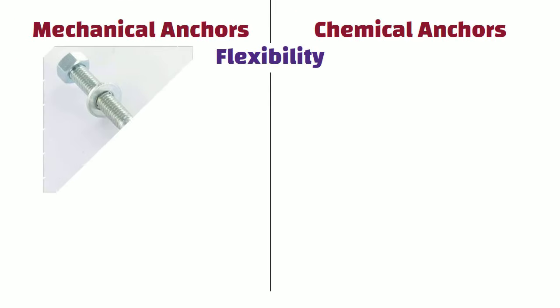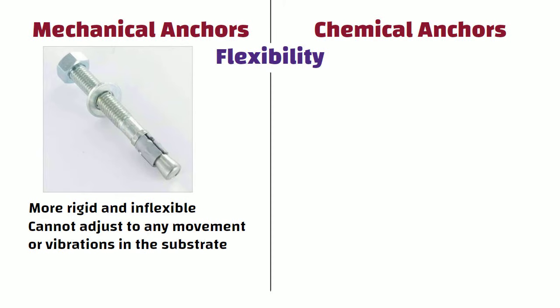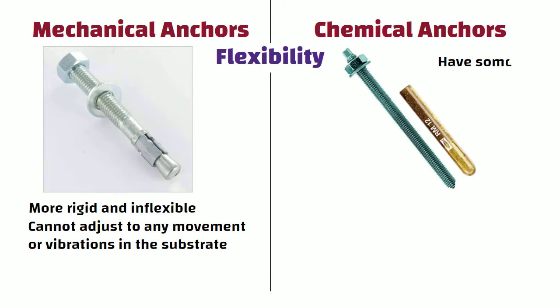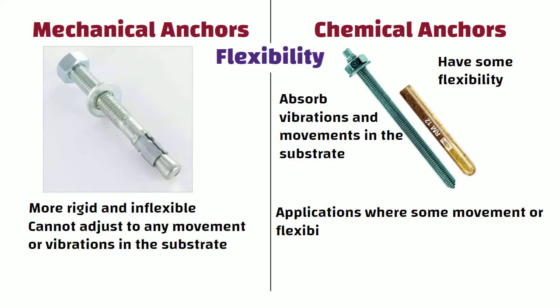Flexibility: Mechanical anchors are more rigid and inflexible — they cannot adjust to any movement or vibrations in the substrate. On the other hand, chemical anchors have some flexibility, allowing them to absorb vibrations and movements in the substrate without compromising their bond strength. This makes them a good choice for applications where some movement or flexibility is required.